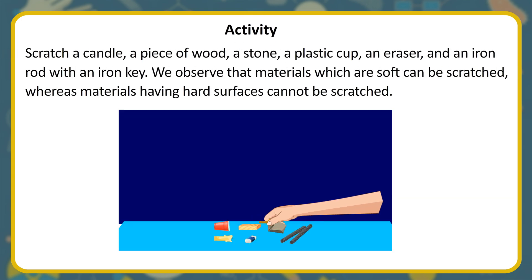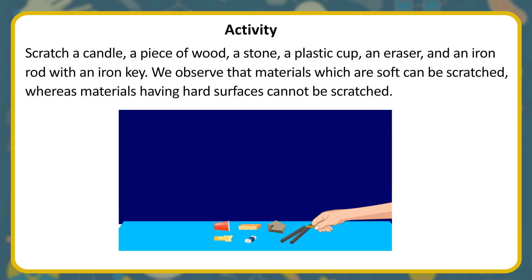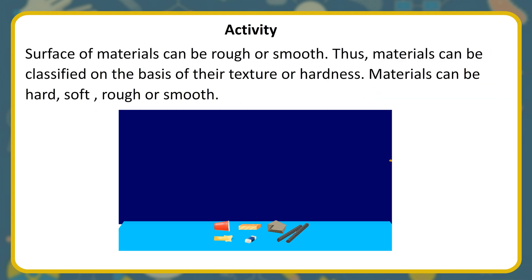Activity: scratch a candle, a piece of wood, a stone, a plastic cup, an eraser, and an iron rod with an iron nail. We observe that materials which are soft can be scratched, whereas materials having hard surfaces cannot be scratched. Surface of materials can be rough or smooth. Thus, materials can be classified on the basis of their texture or hardness — materials can be hard, soft, rough, or smooth.